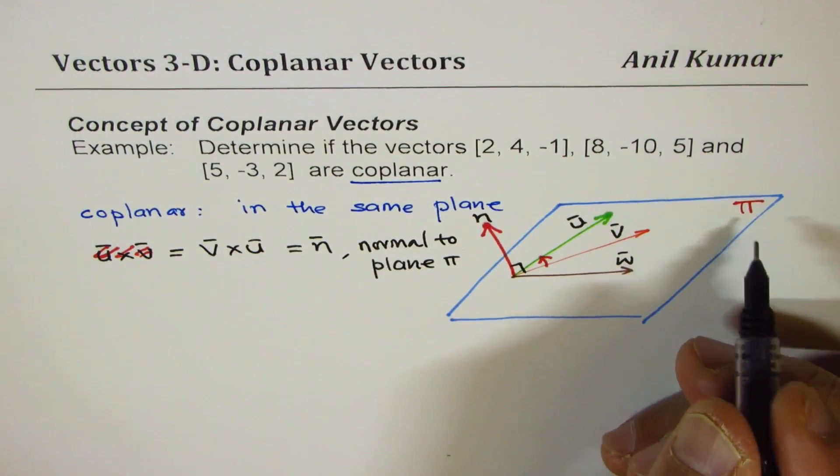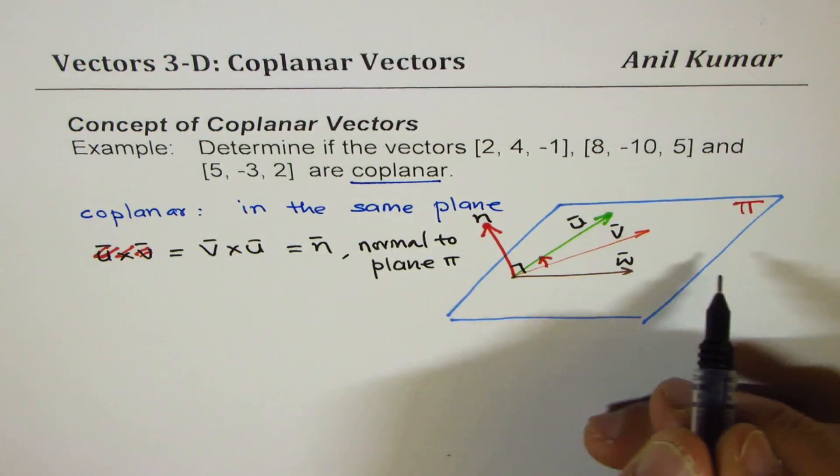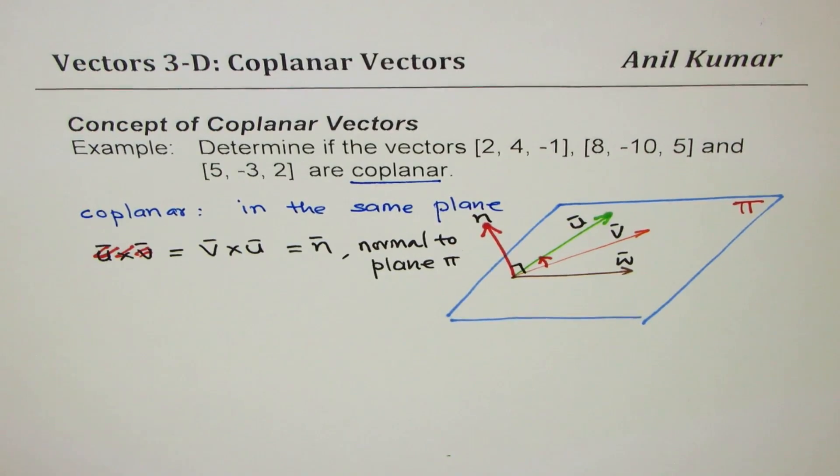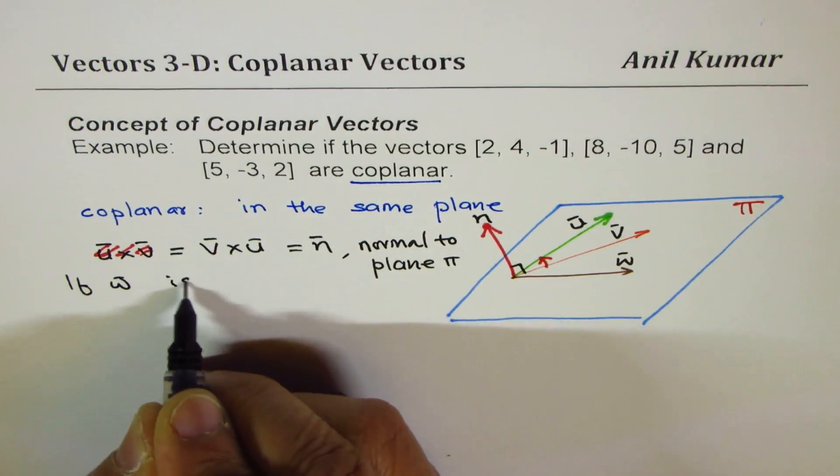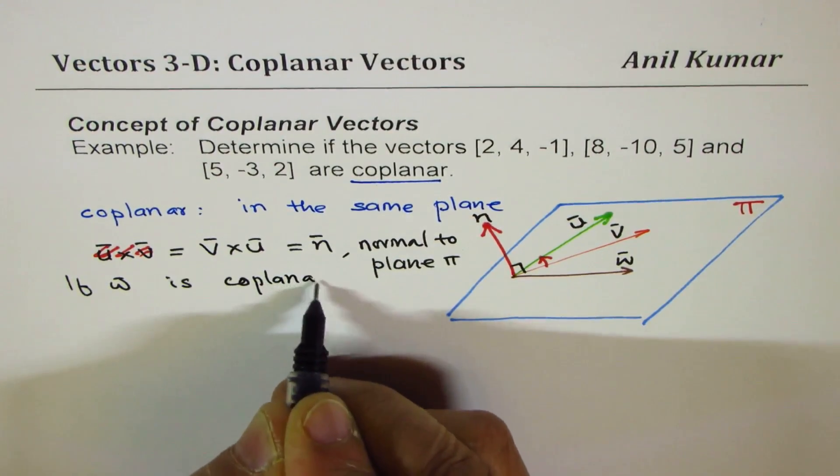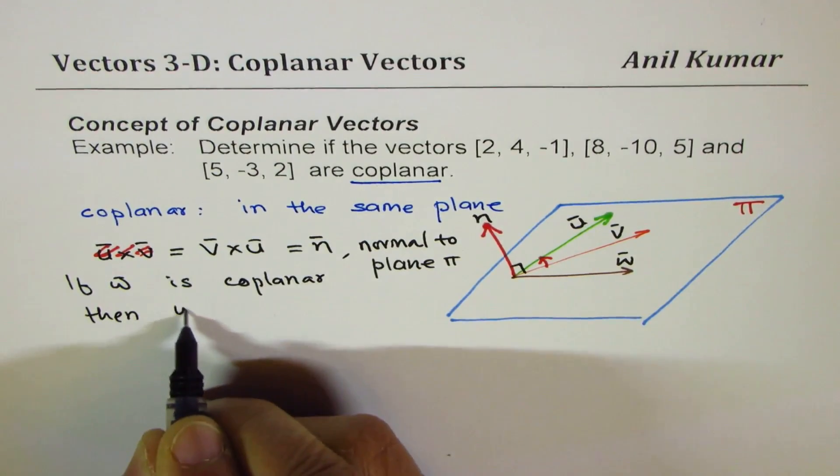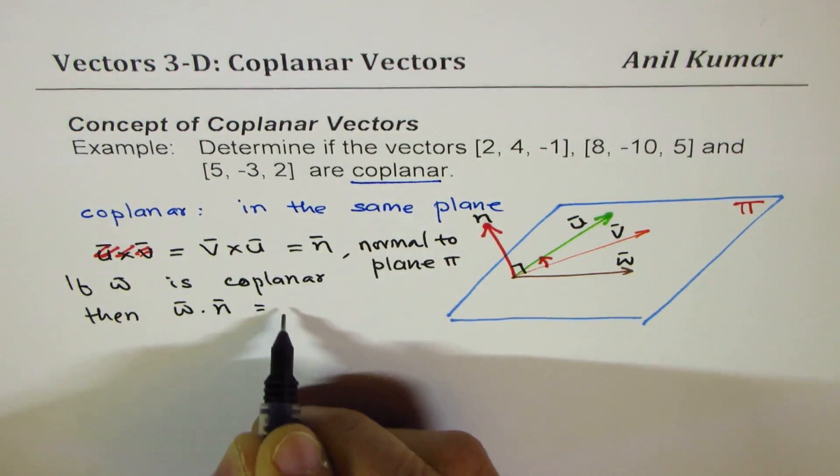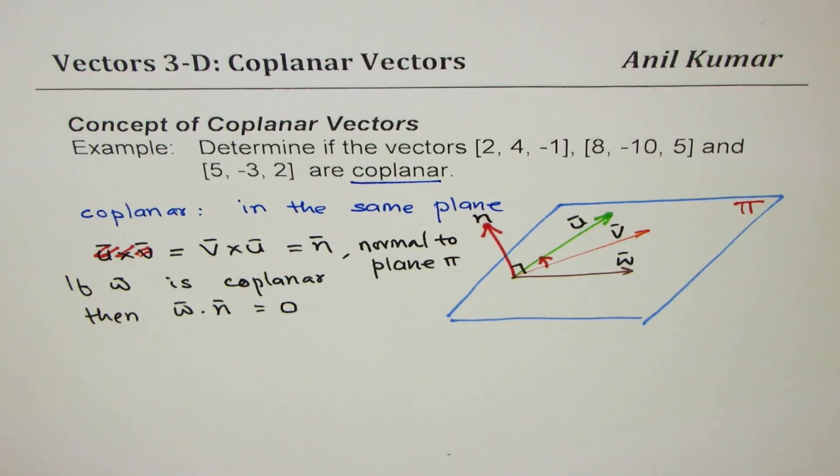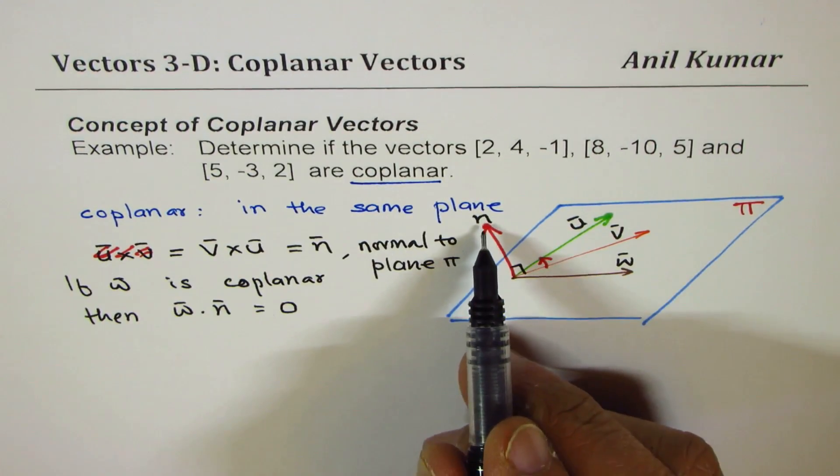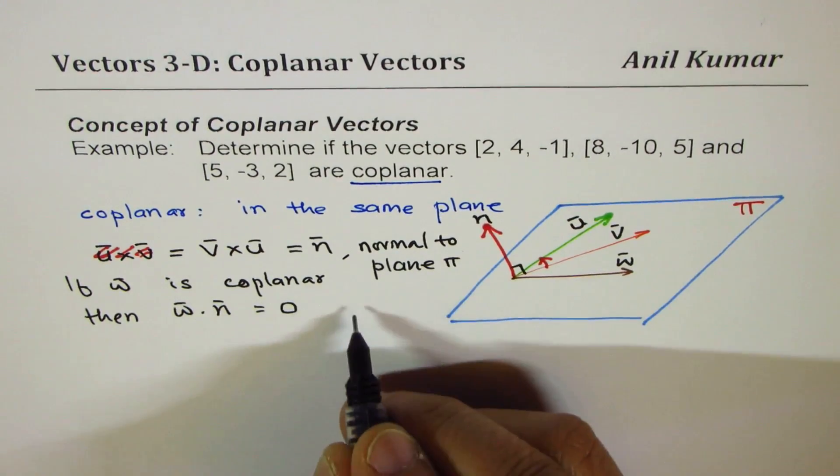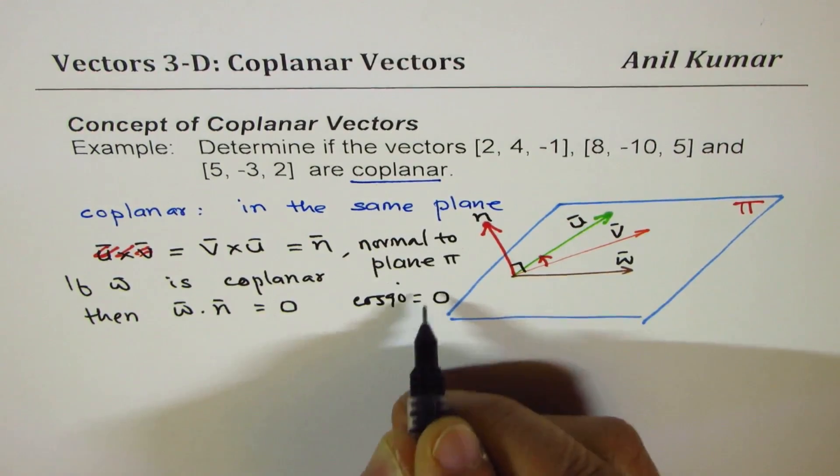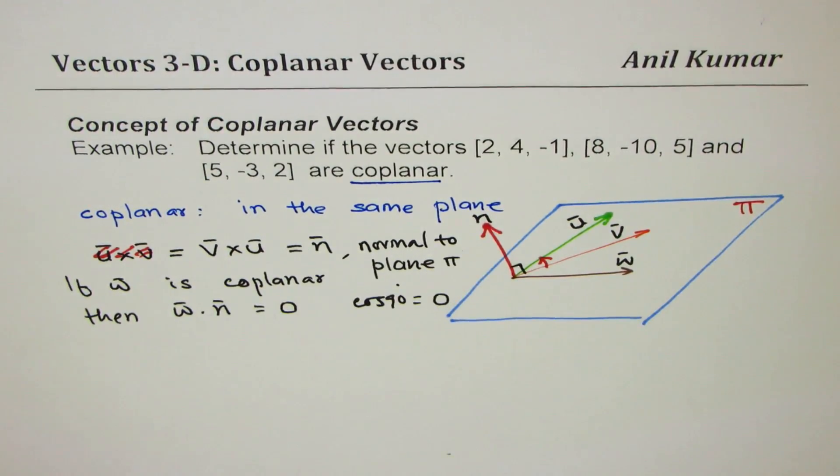If it is normal to the plane π, it is normal to each and every vector on this particular plane. Now, if this vector w is coplanar, then the dot product of w and n should be 0. Since normal vector is normal to the whole plane, it is normal to w also.